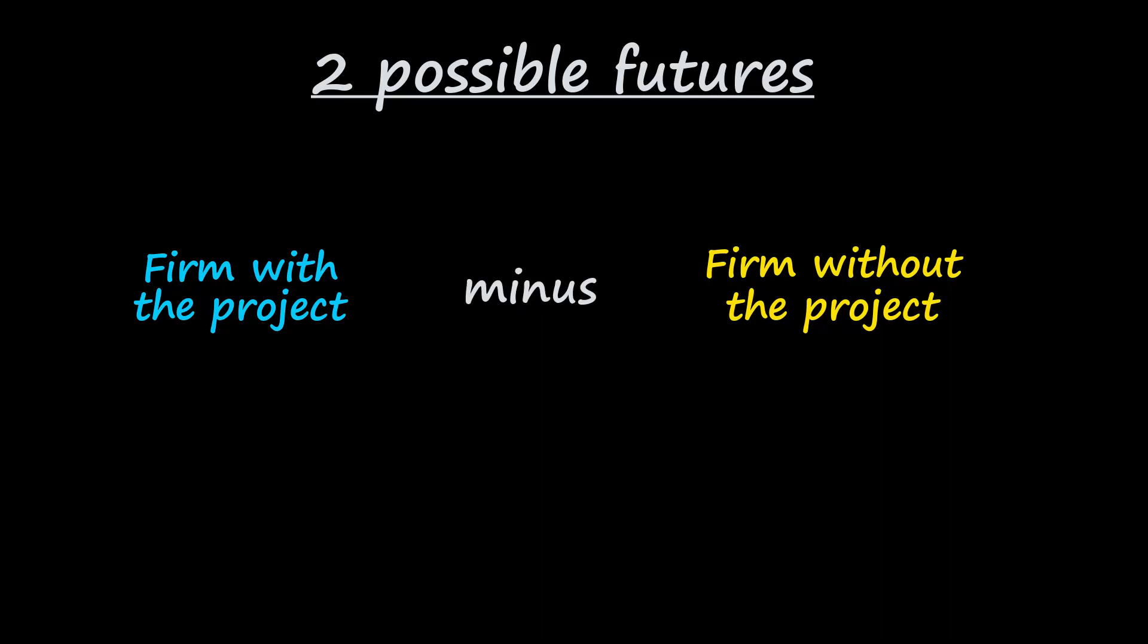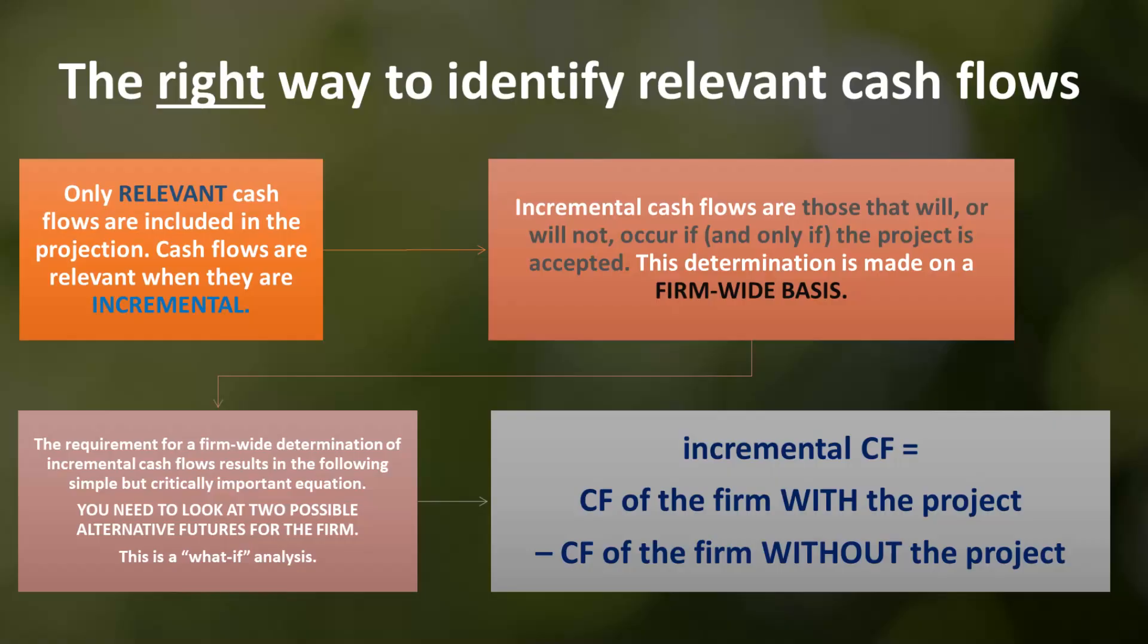It is the difference between these two alternative and competing future realities, only one of which can happen, that generates the numbers for the capital budgeting schedule. Incremental cash flows are the cash flows of the whole firm with the project minus the cash flows of the firm without the project. This simple equation unlocks a true understanding of the correct responses to all of the non-routine cash flows that might occur in investment decision making. There is no need to memorize any definitions of sunk or opportunity costs or anything else.